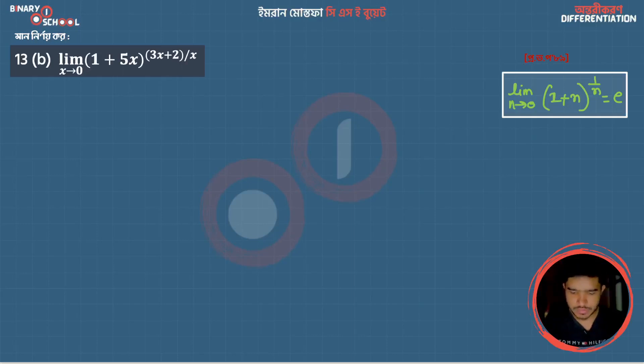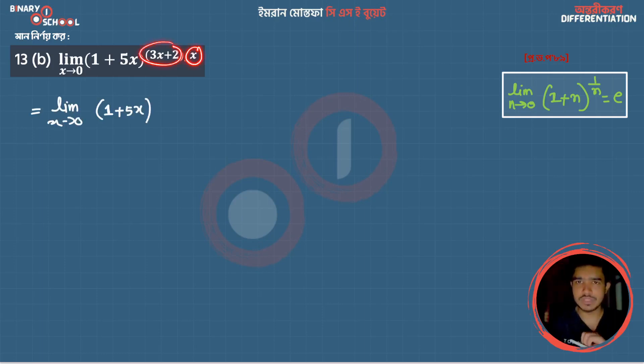You can calculate the limit as x extends to 0: 1 plus 5x to the power 3x plus 2 by x. I can modify this - limit extends to 0 to the power 3x by x. So I change it by x: 3x by x plus 2 by x.